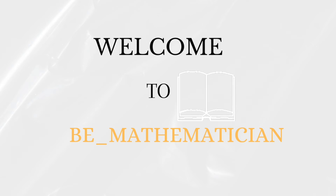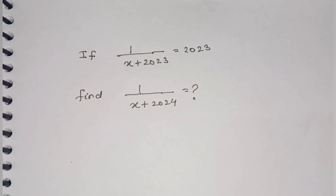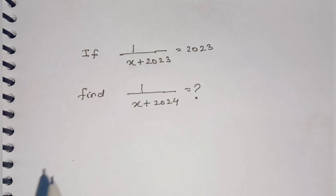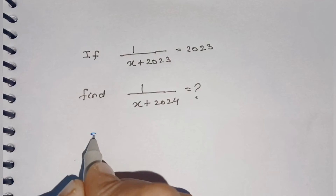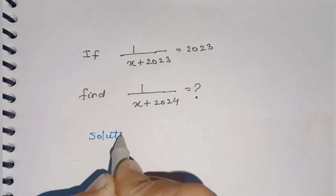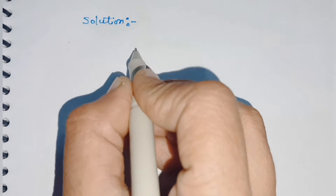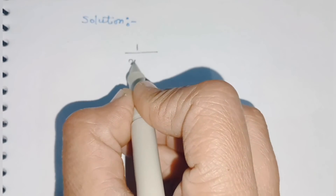Hello friends, welcome to Be Mathematician. In today's video we have an amazing problem to solve. It is given that 1 over (x + 2023) is equal to 2023, and we have to calculate the value of 1 over (x + 2024). Now let's come to the solution. First we'll write the given equation as it is: 1 over (x + 2023) is equal to 2023.